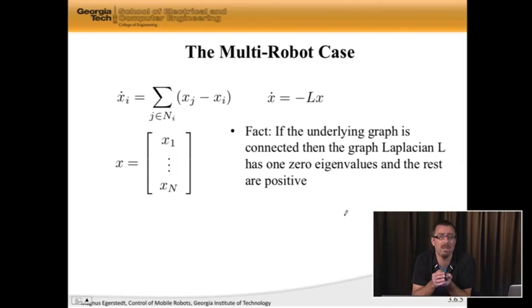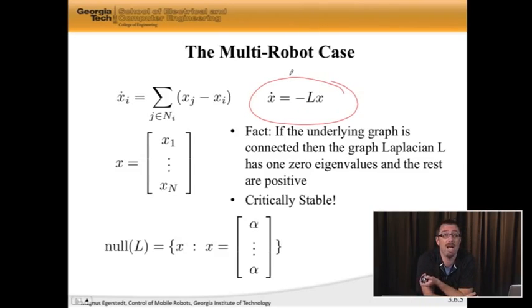And the fact is that if the underlying graph is connected, then L has one zero eigenvalue, and the rest of the eigenvalues are positive. But look here, we have negative L here, which means that negative L has one zero eigenvalue, and the rest of the eigenvalues are negative. That means that this system here, the general multi-agent system here is actually critically stable.